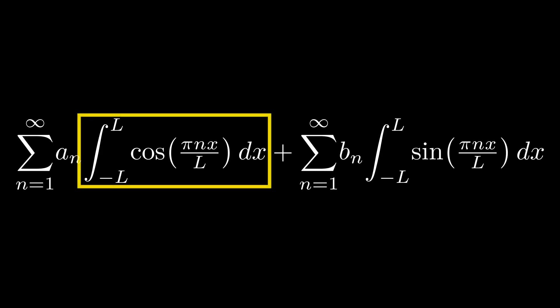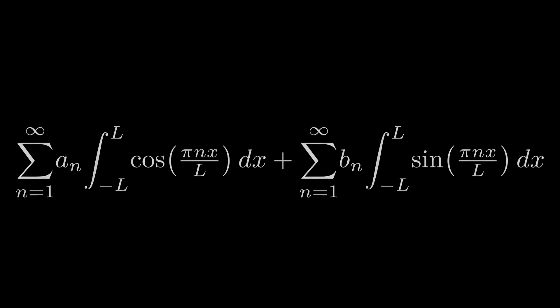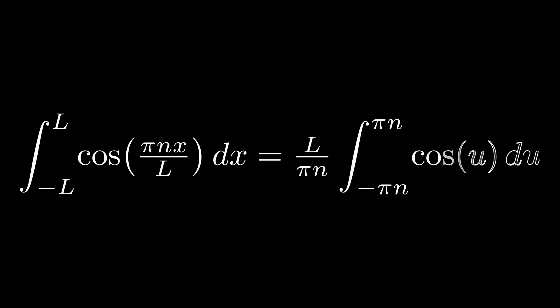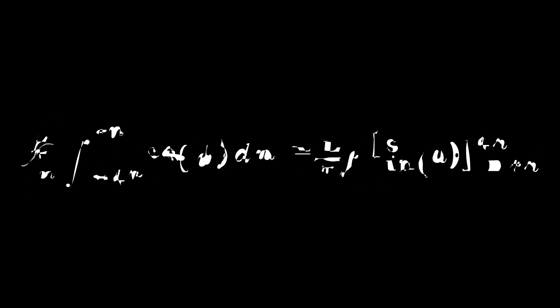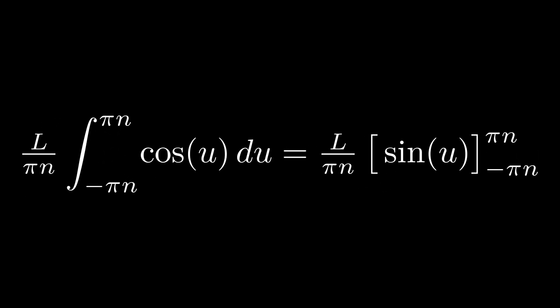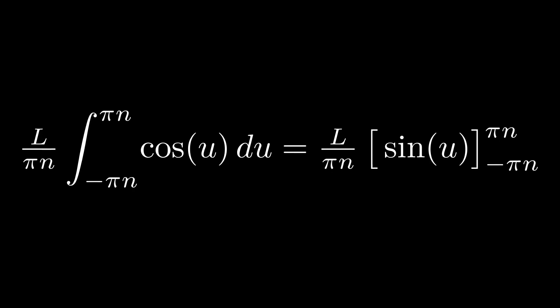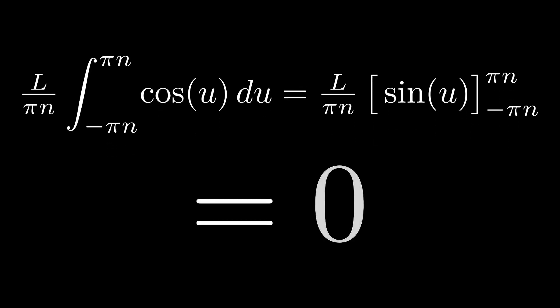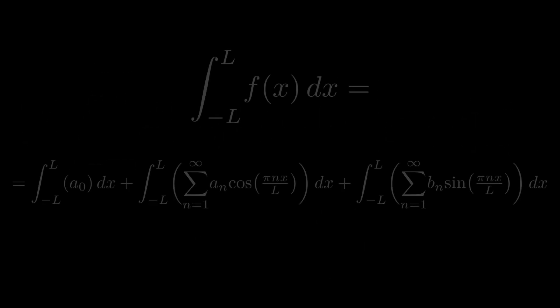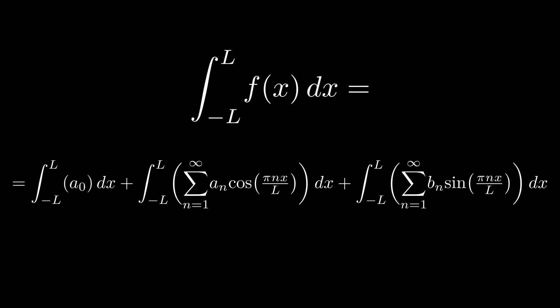Now let's look at the cosine integral first. Using u substitution, we can very quickly see that the integral is equal to zero for every value of n. Remember that n is an integer, so sine of n pi is always zero. This means that when we integrate f of x from negative l to l, the cosine sum vanishes.